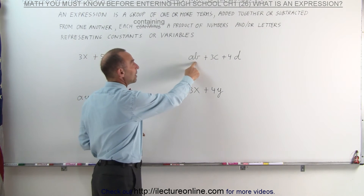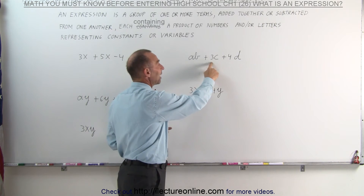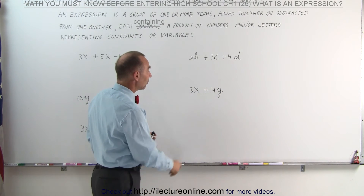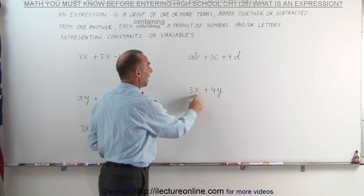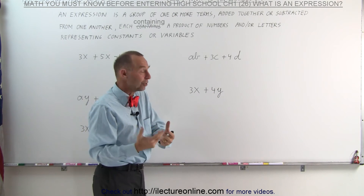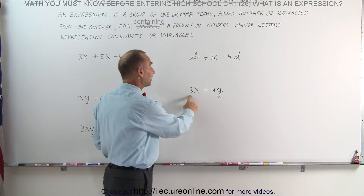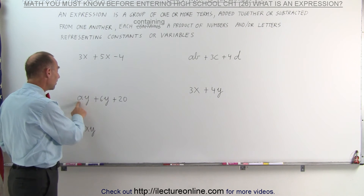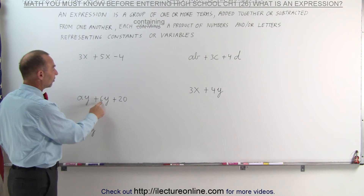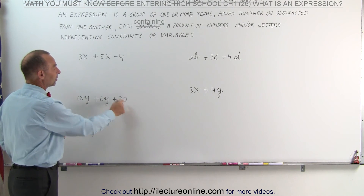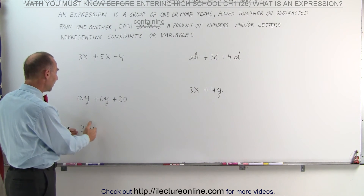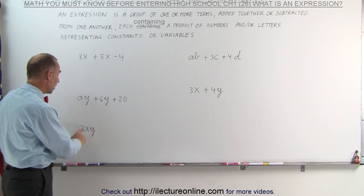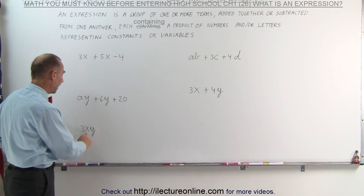Here we have a times b, assumed to be two constants, plus 3 times c, c assumed to be a constant, plus 4 times d, d assumed to be a constant. Here we have 3 times x, plus 4 times y — x and y represent variables, can be any value, and they're not going to be the same. So 3 times an unknown value, plus 4 times another unknown value. Here we have a constant times a variable, a times y, plus 6 times y, y assumed to be a variable, plus the constant 20. And here we simply have a single term that's still called an expression — it doesn't have to be more than one term. It can be a single term: 3 times the product of two unknown variables, x and y.